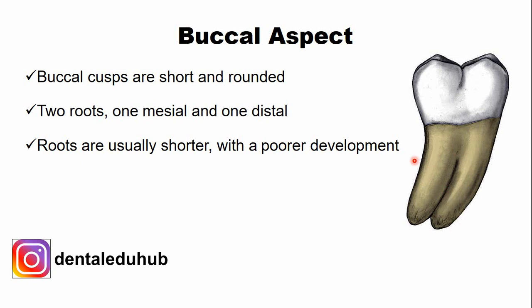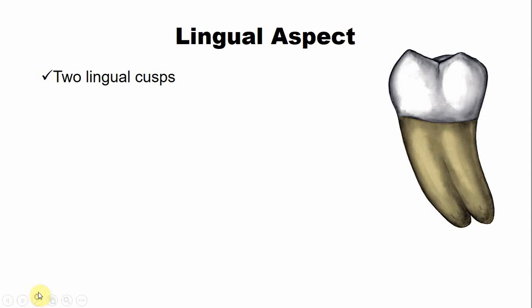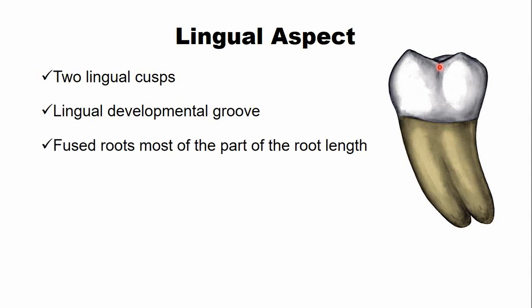The roots of the mandibular third molar are usually shorter in length and generally poorly developed compared to the first and second molars. The roots may be separated like the mandibular second molar, or they may be fused for most of the root length with separation only at the apical portion. From the lingual aspect, there are two cusps — the mesiolingual and distolingual — with a lingual developmental groove between them. The mesial and distal roots are fused and pointed in the inner distal direction.